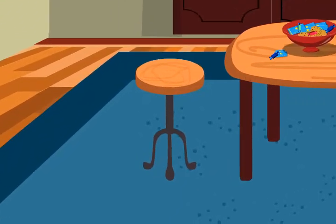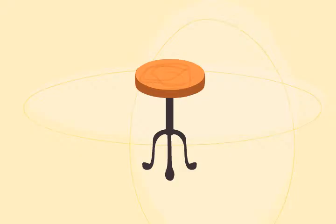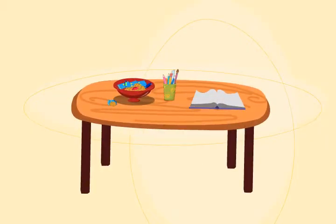A three-legged stool is always steady on an uneven floor, but a four-legged table is often unstable.